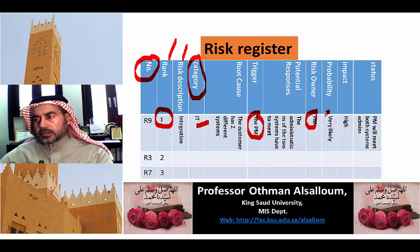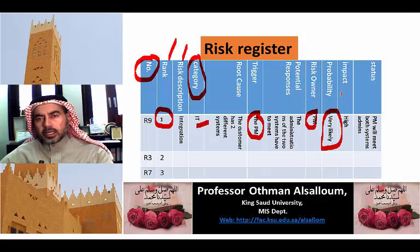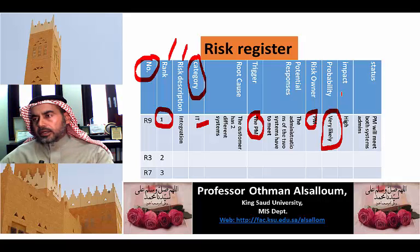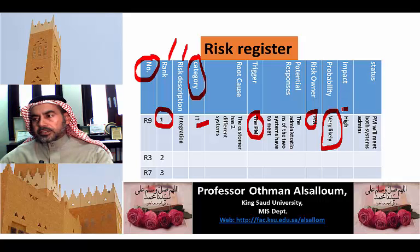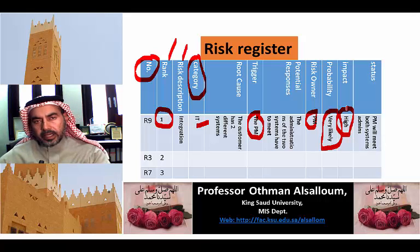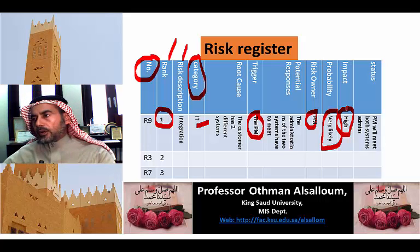We also assess whether it is high probability, very high probability, or unlikely, and put this in the Risk Register spreadsheet. We also assess the impact on our project — whether it is very high impact, high, medium, or low.